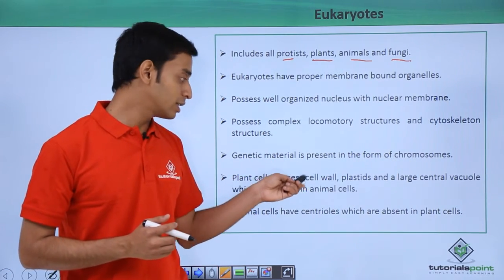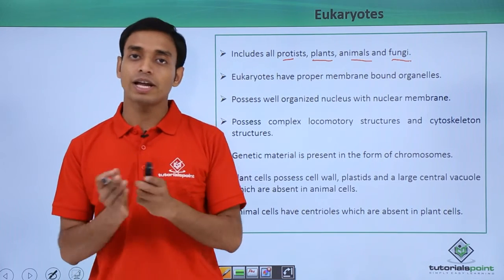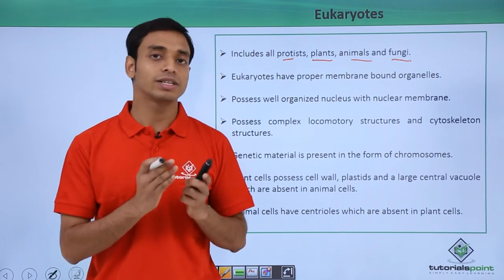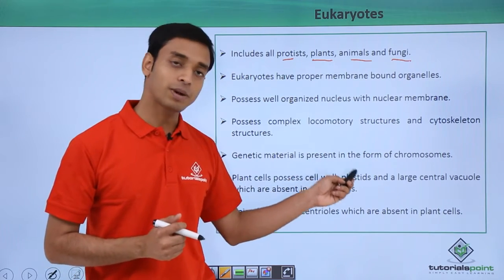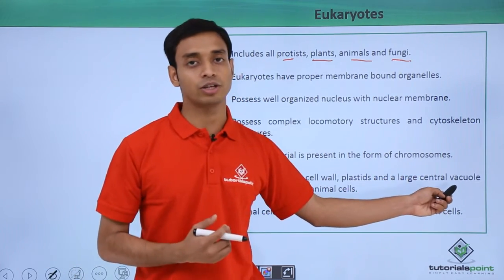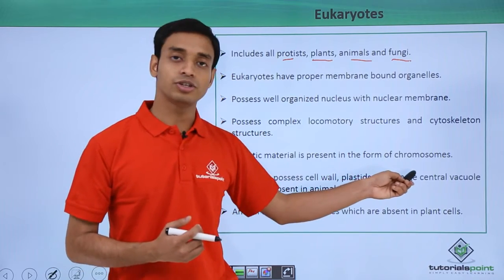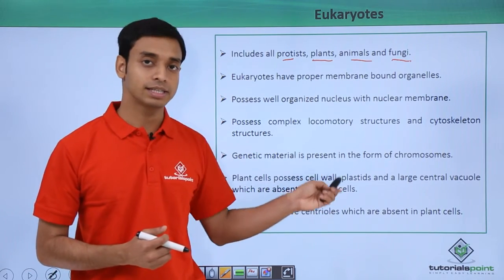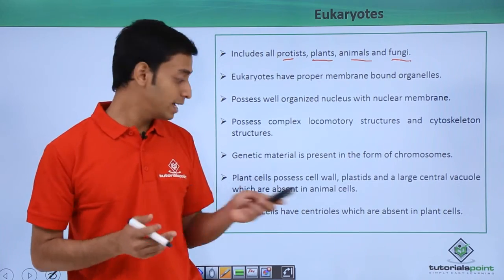Eukaryotes can be plants or animals. Plant cells have a cell wall, plastids, and a large central vacuole. These three features are absent in animal cells.